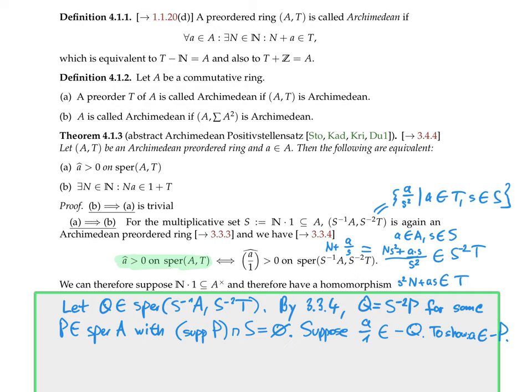We have shown that condition a (positivity on real spectrum of (A,T)) is equivalent to condition a' (positivity of a/1 on real spectrum of localization). I also claim that b (there exists n in ℕ with na lies in 1+T) and b' (there exists n in ℕ with na/1 lies in 1 + S⁻²T) are equivalent.